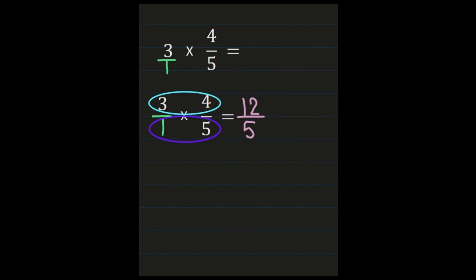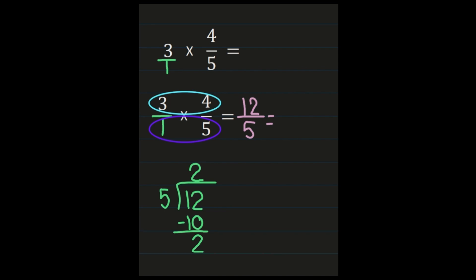1 times 5 is 5, so now I have 12 fifths, and that is an improper fraction. Most of us are going to need to turn it into a mixed number. Note: if your teacher says to leave it as an improper fraction, leave your answer as 12 fifths. To turn our improper fraction into a mixed number, we divide our numerator by the denominator: 12 goes on the inside, 5 goes on the outside. 12 divided by 5 is 2. 2 times 5 is 10, and when we subtract we get 2. Our quotient of 2 becomes our whole number, our remainder of 2 becomes the numerator, and our denominator of 5 remains the same. 2 and 5 don't share any common factors, so my final answer is 2 and 2 fifths.